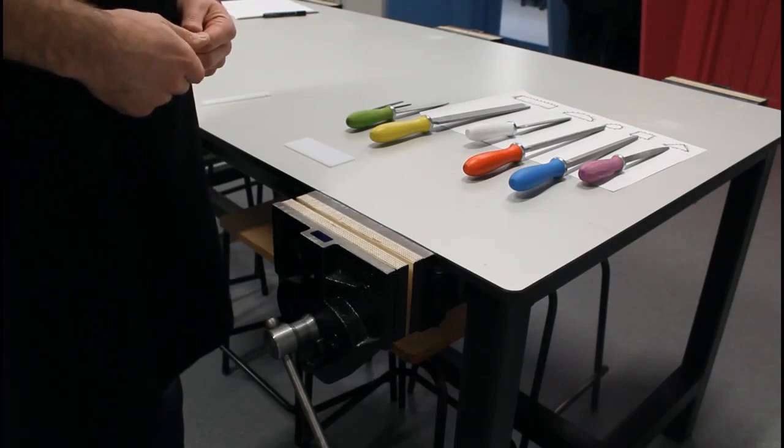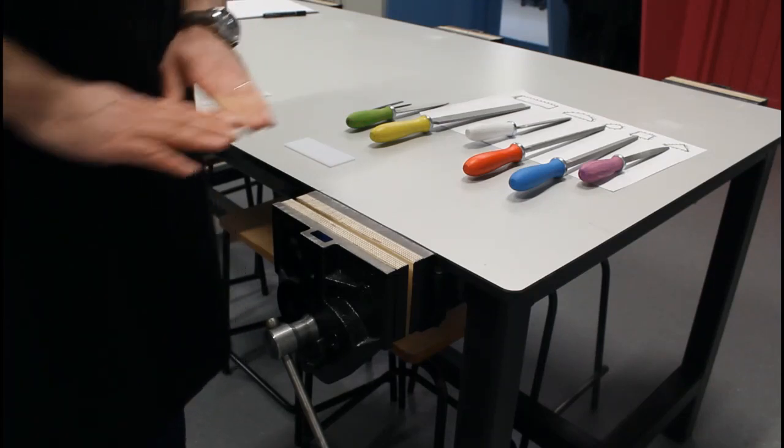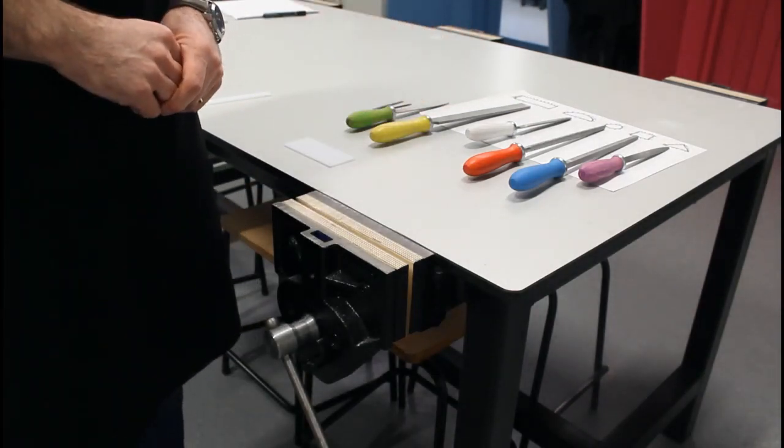There are two techniques when we're filing. The first one I'm going to show you is what we call cross filing, going across the material to remove the waste.